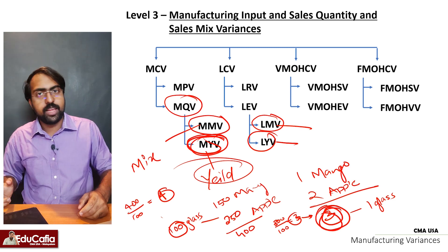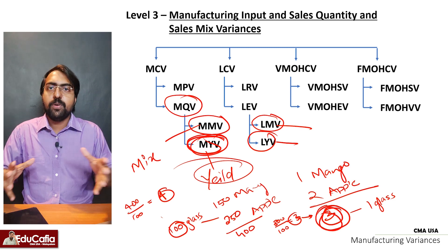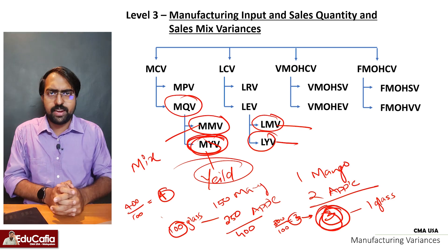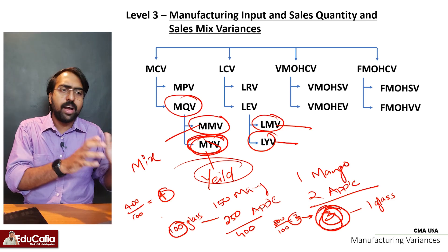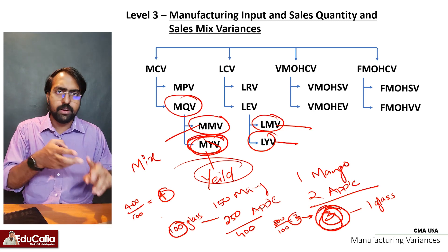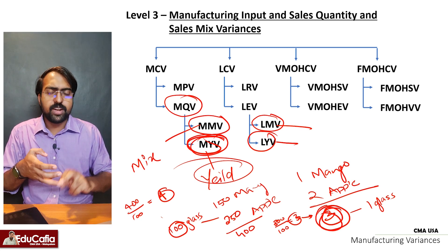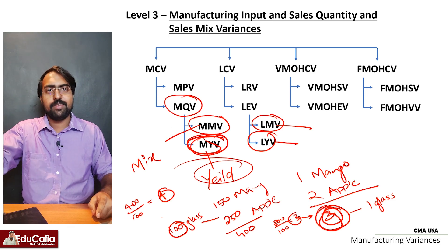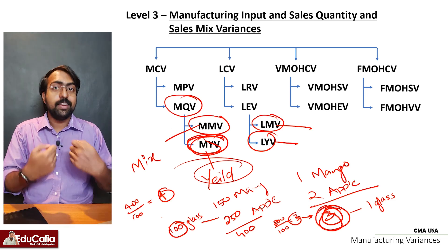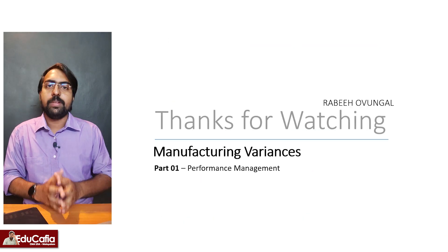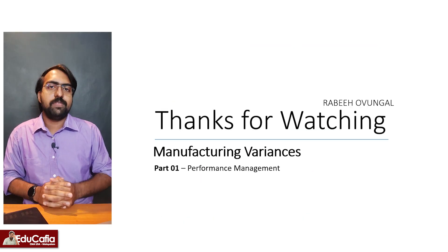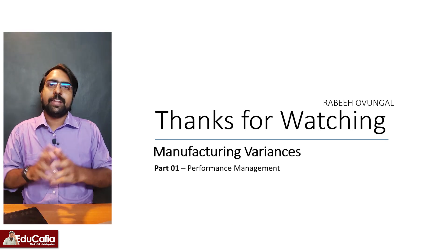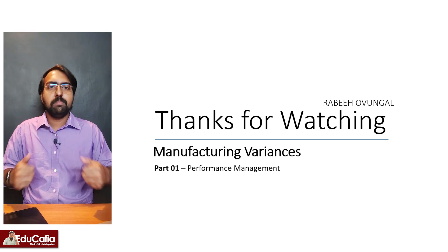If you do it, you will have a mix variance. If you do it, you will have a yield variance. This is the manufacturing input discussion. There are 4 materials: labor, variable manufacturing overheads, and fixed manufacturing overheads. These 4 will be discussed in detail in the latest videos. You will enjoy the video — the material cost variance.